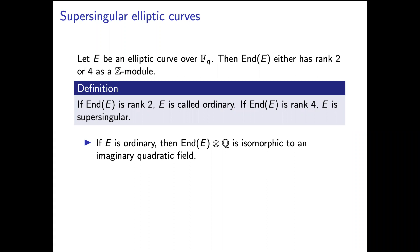Let E be an elliptic curve over F_q, a finite field with cardinality q. Then the endomorphism ring End(E) is either rank 2 or rank 4 as a Z-module. If End(E) is rank 2, E is called ordinary. If End(E) is rank 4, E is supersingular.